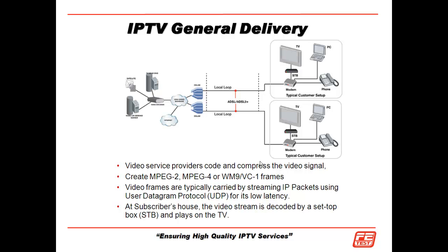If we look at the IPTV general delivery pathway, we start with the video head-end where we generate a video signal, encode it, and possibly encrypt it in order to reduce the bandwidth. We put it over the IP core network, and then finally it goes across either DSL or fiber to the home, where it goes through the fiber or DSL modem, into the set-top box, and is finally delivered to the TV.